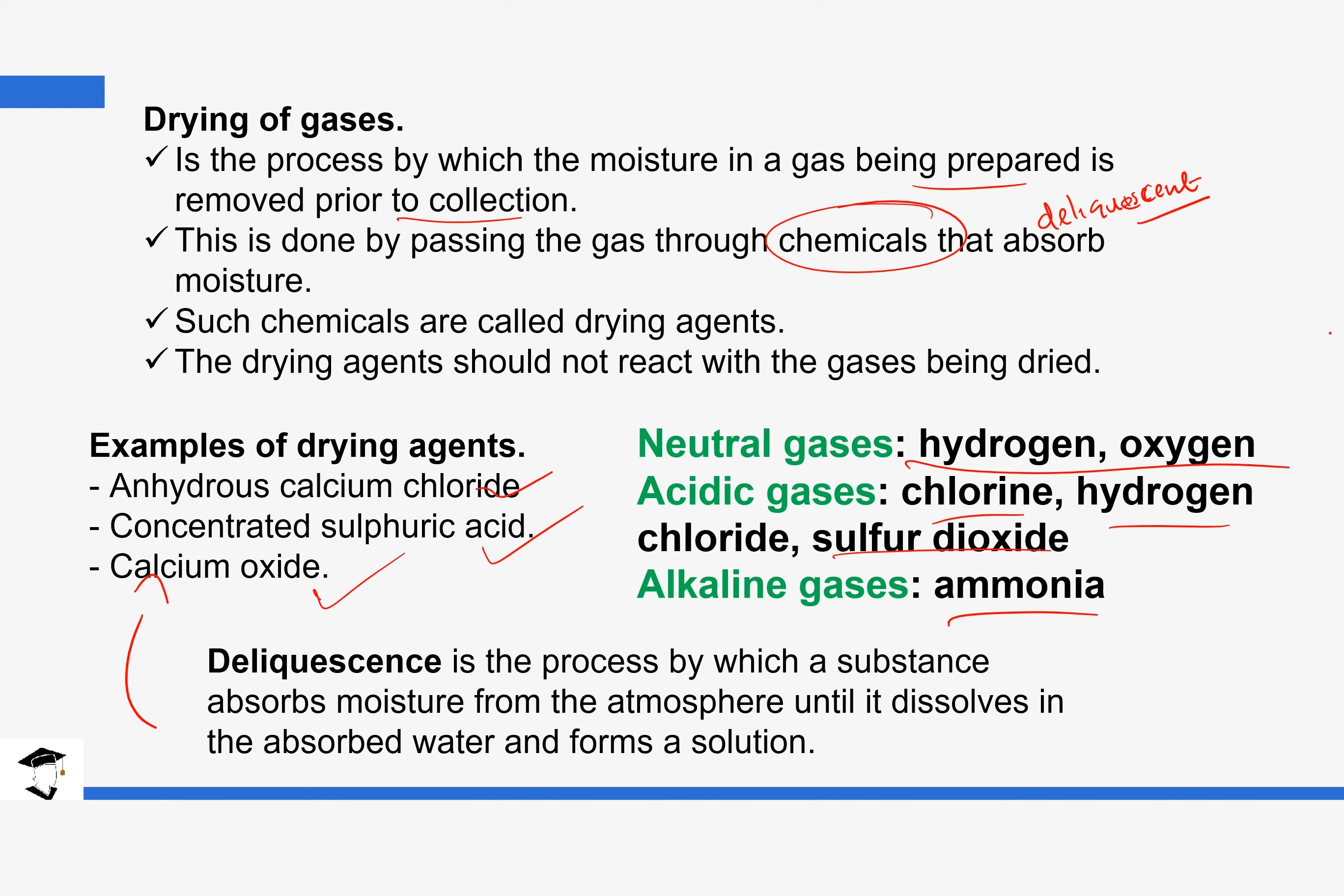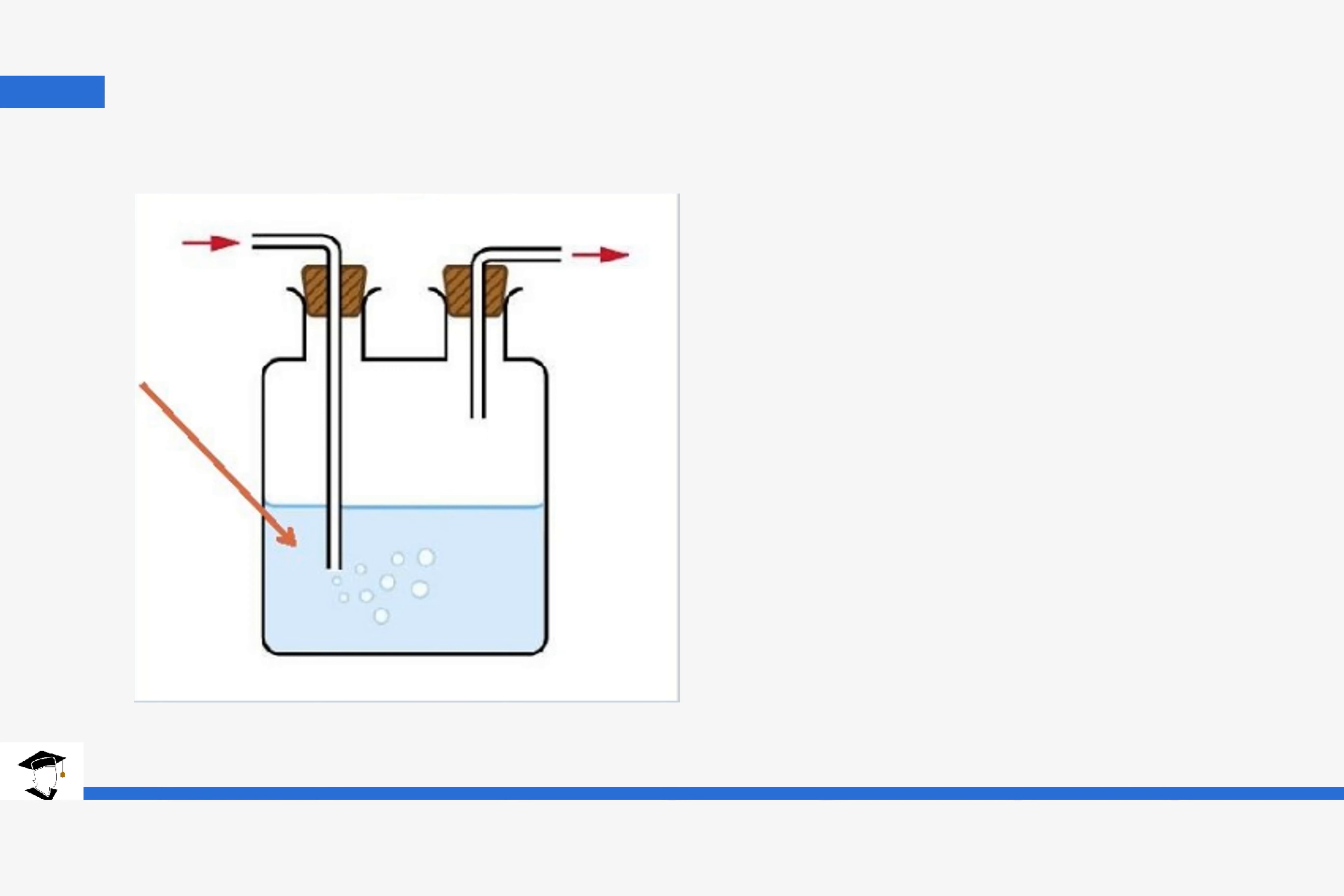So first of all, we are going to start with the concentrated sulfuric acid which is in solution. So our gas is passed through the solution containing sulfuric acid. You can see the tube needs to get inside the solution and then the one that is picking the dried gas needs to be on the top.